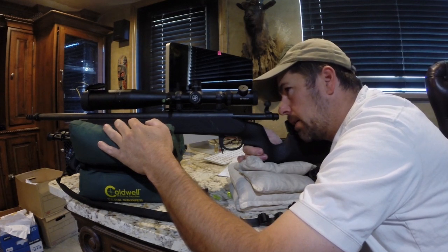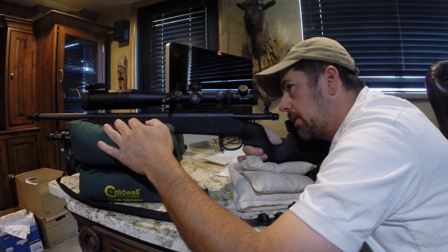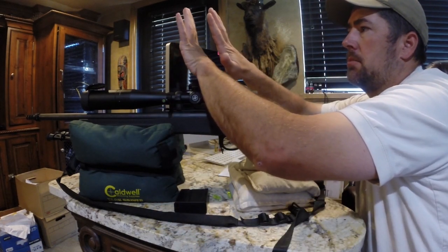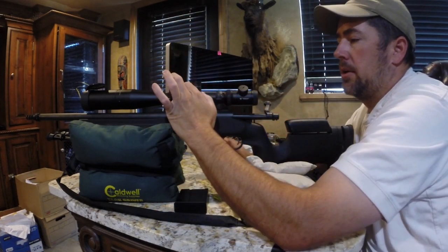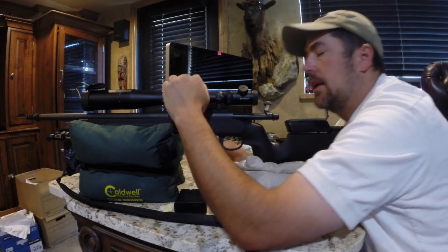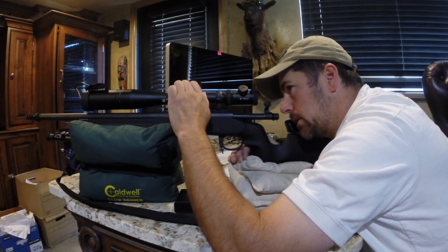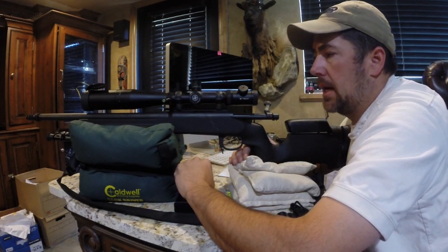So the way you check this, don't necessarily pay attention to the marks on it. What you're going to do is you're going to be on target, and you're going to bob your head up and down and side to side. You'll see your crosshairs moving on the target. And you're going to dial this until you see that it stops moving. Once it stops moving, then you know your parallax is set.